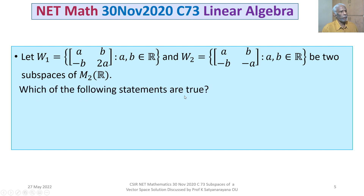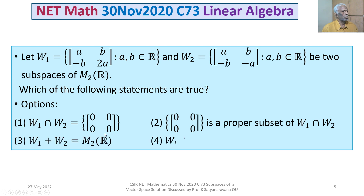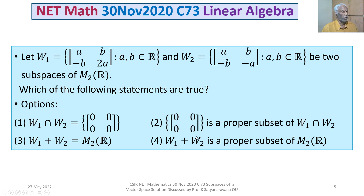Which of the following statements are true? We are given 4 options. Option 1: W1 ∩ W2 equals the set containing only the 2×2 zero matrix. Option 2: the singleton set containing only the 2×2 zero matrix is a proper subset of W1 ∩ W2. Option 3: W1 + W2 equals M2 over R. Option 4: W1 + W2 is a proper subset of M2 over R.